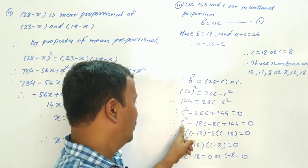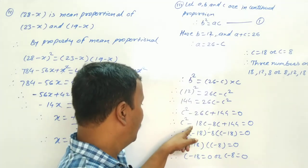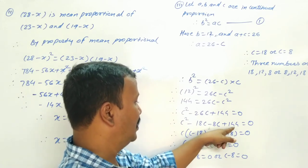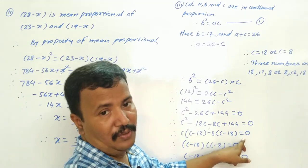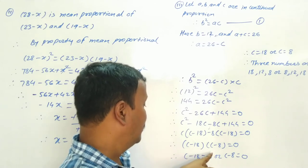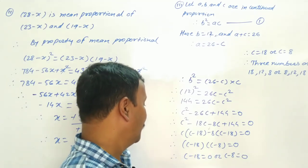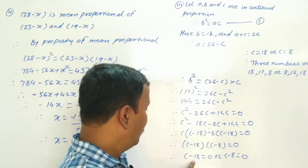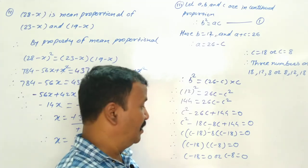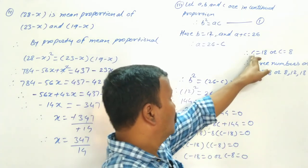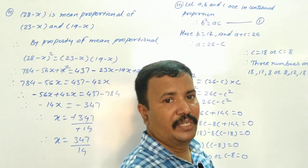Those numbers are 18 and 8. So C squared minus 18C minus 8C plus 144 equals 0. Factoring: C(C minus 18) minus 8(C minus 18) equals 0, giving (C minus 18)(C minus 8) equals 0. Therefore C equals 18 or C equals 8.